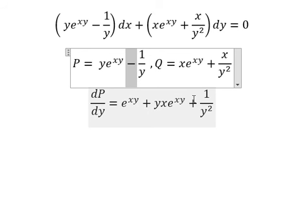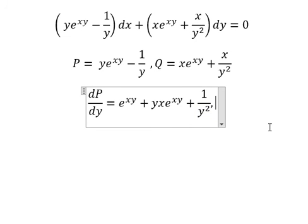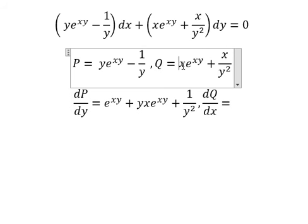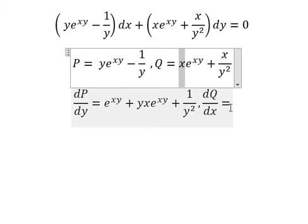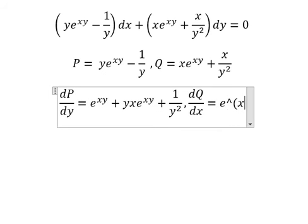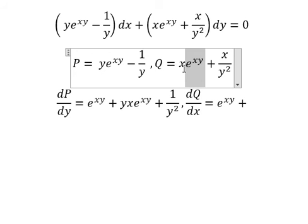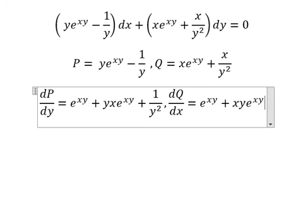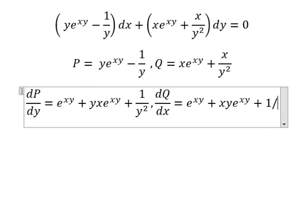Now we have the dy term, so we need to do the first derivative of Q with respect to x. We have x·e^(xy) and x. If we do the first derivative of x, we get e^(xy). If we do the first derivative of the next term, we get y·e^(xy). The first derivative of x gives 1, and we have 1/y². We see that this result equals the previous one.